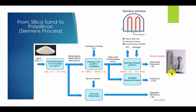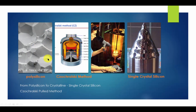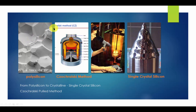This electronic-grade silicon has a purity of 99.9999999999, which has 11 nines. However, it is not single-crystal silicon. Instead, it is polysilicon, composed of lots of small silicon crystals, and the boundaries between them can cause trouble with electronic signals. So we have to convert it to large single-crystal silicon.